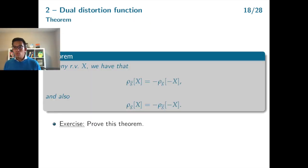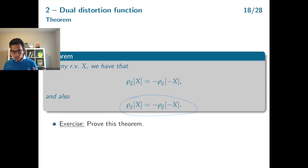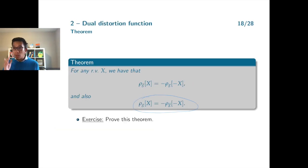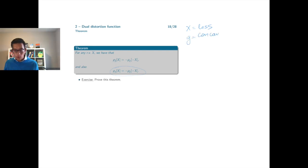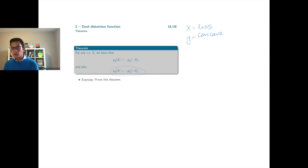In this theorem, we relate the distorted expectation of a random variable with its dual distorted expectation. The key result is that the distorted expectation of x equals minus the dual distorted expectation of minus x. To understand this: if x is a loss random variable, we need a concave distortion function, because a concave distortion function increases the tail probabilities and applying the distortion function can be thought of as stressing the loss random variable.